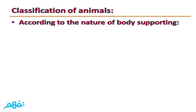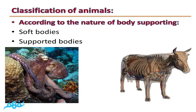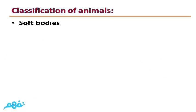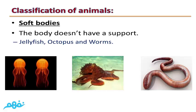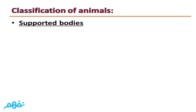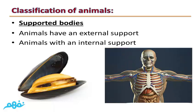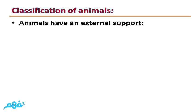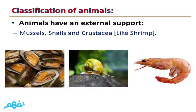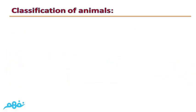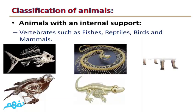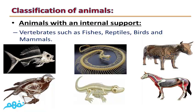Classification of animals: Animals can be classified according to the nature of body support into soft-bodied animals and supported-body animals. Soft-bodied animals have no support, such as jellyfish, octopus, and worms. Supported-body animals are divided into those with external support, such as mussels, snails, and crustaceans like shrimp, and those with internal support, called vertebrates, such as fish, reptiles, birds, and mammals.